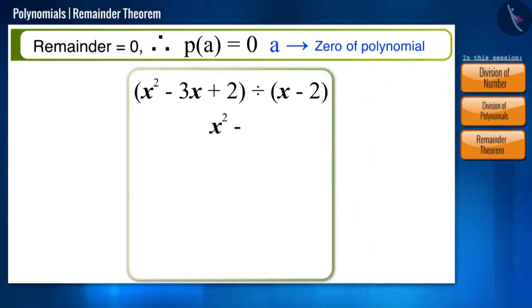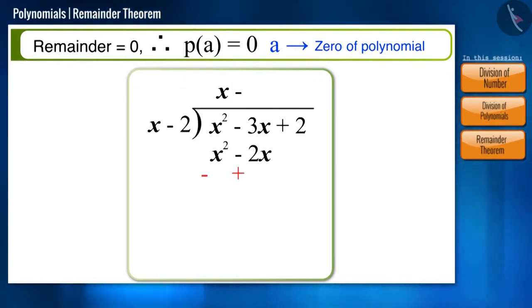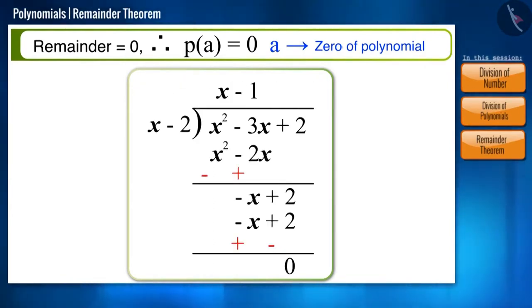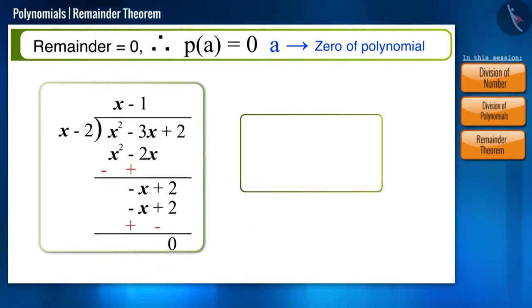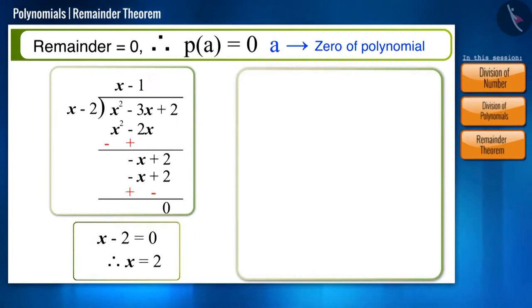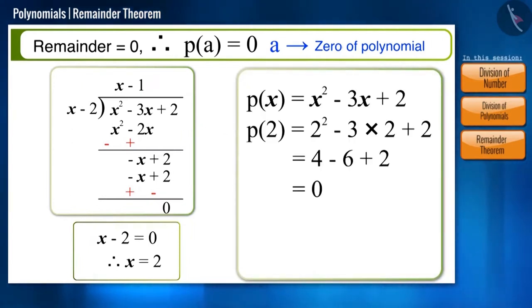Let's look at an example for this. On dividing the polynomial x squared minus 3x plus 2 by x minus 2, we get the remainder as 0. Now, by equating the divisor x minus 2 to 0, we get x is equal to 2 and p of 2 will be 0. That means 2 is the 0 of this polynomial.